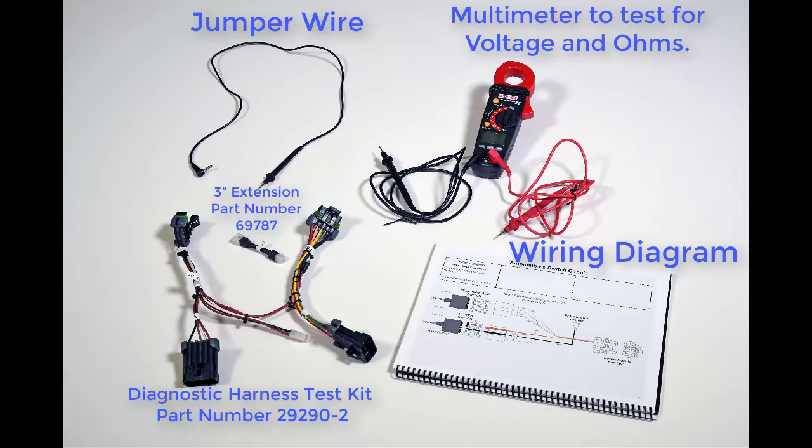Number one, make a jumper wire. This will allow you to bypass potential bad components and open wires.